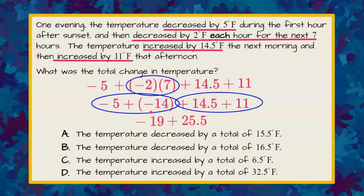So now I have two values left and they have two different signs. The rule for adding integers or rational numbers with two different signs is to take the larger absolute value, which is 25.5, and subtract the smaller value, which is 19.